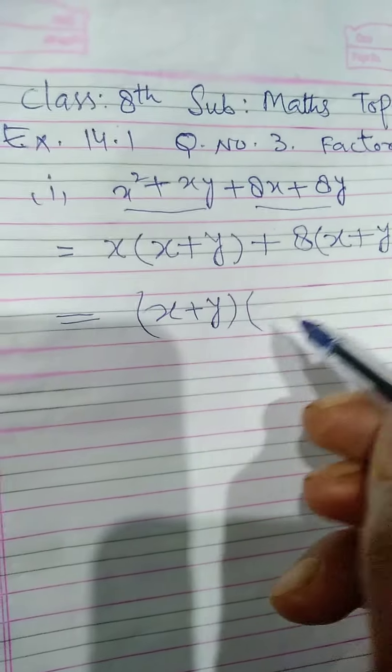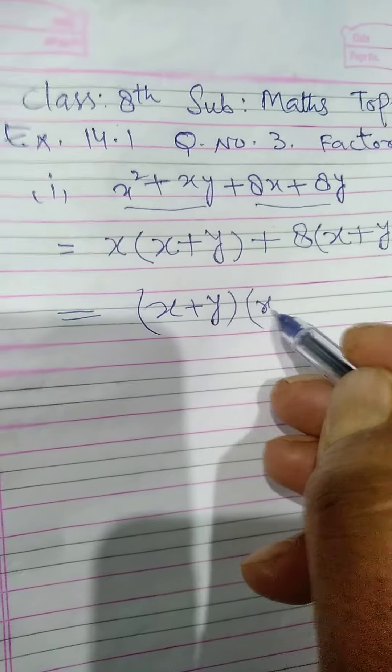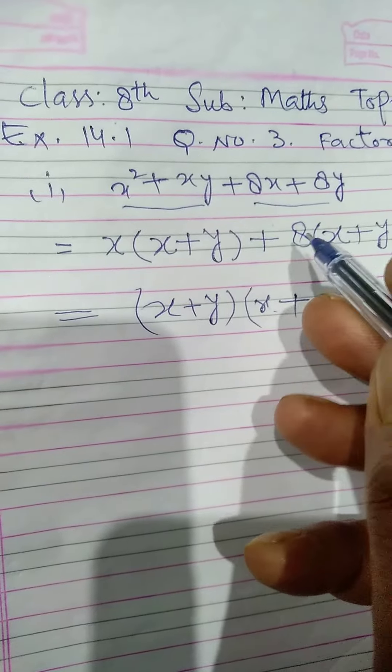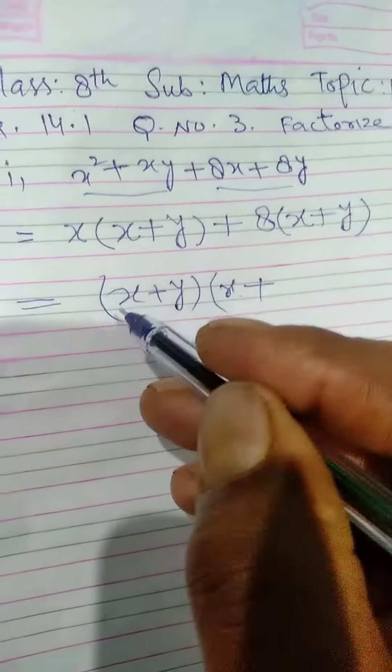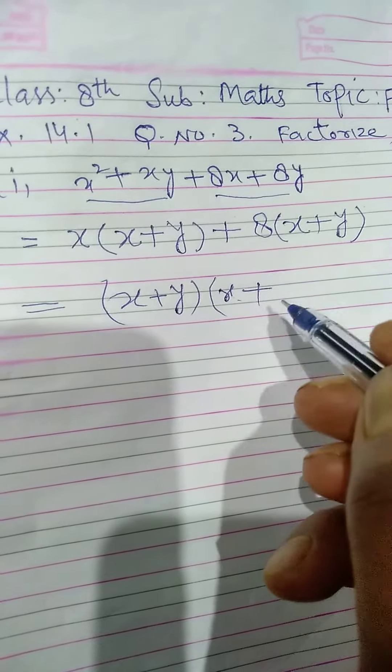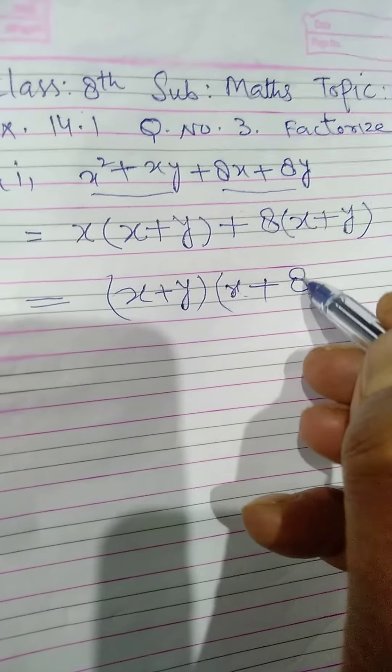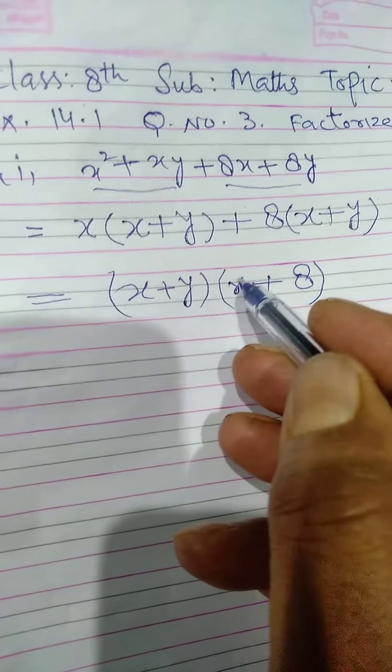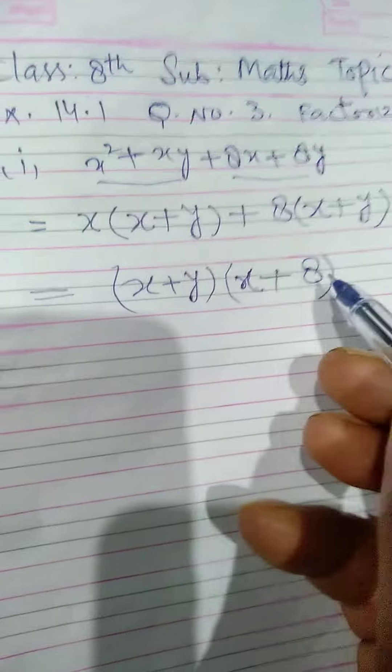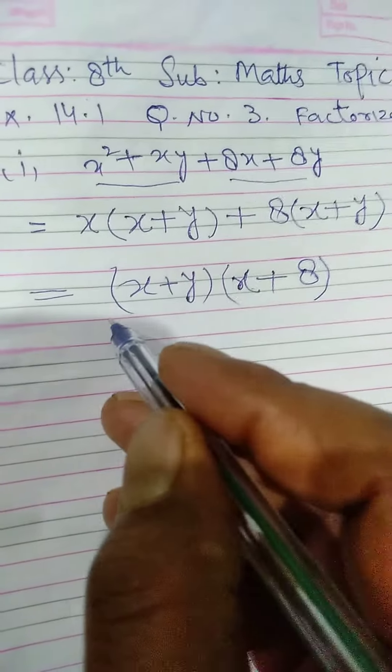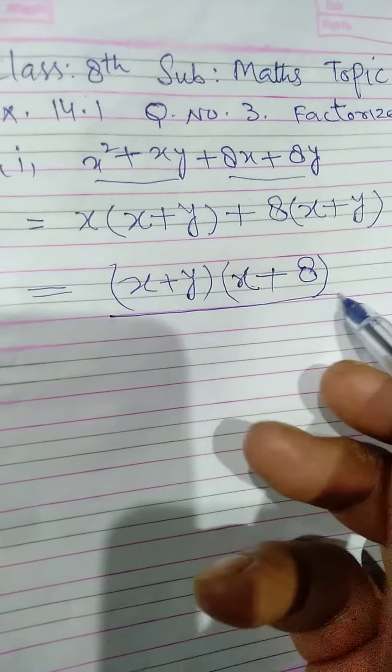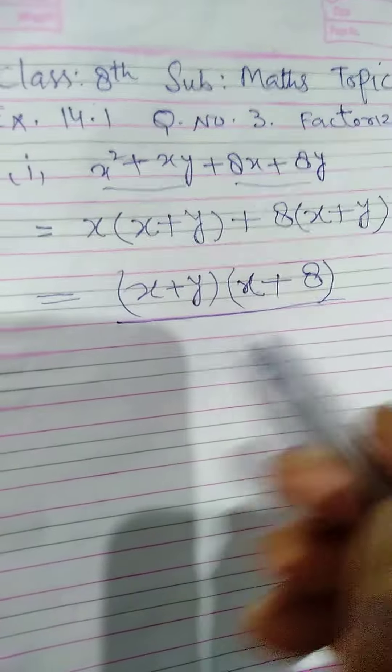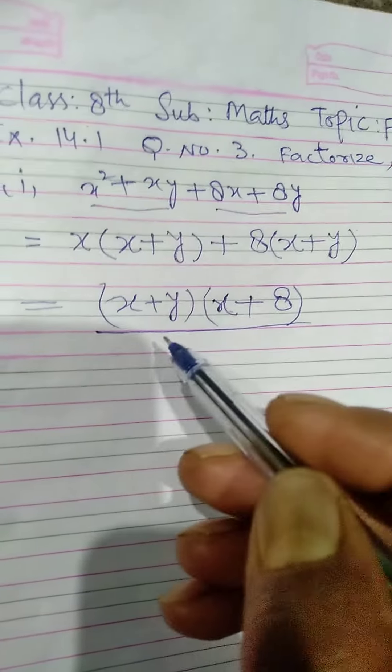Plus, x + y is out. Now we have 8, it is another factor. So (x + y)(x + 8). This is the factorization of given expression. So there you are.